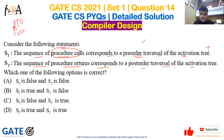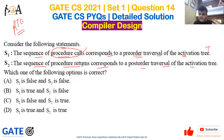Statement one is true because in an activation tree, the parent must call its child first in order to proceed, which corresponds to pre-order traversal. Statement two is also true because in order to return, a child will return first and after that the parent will return, which is similar to post-order traversal.